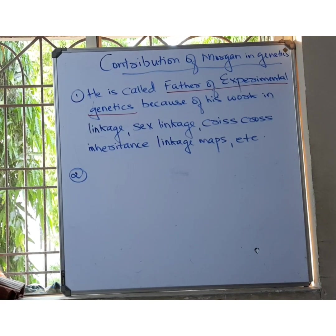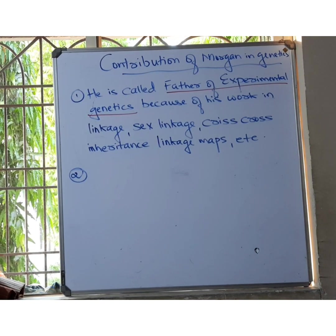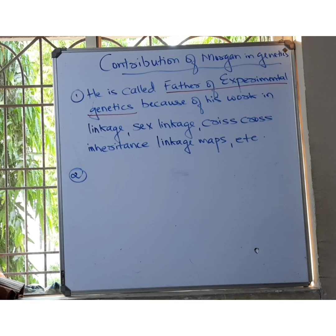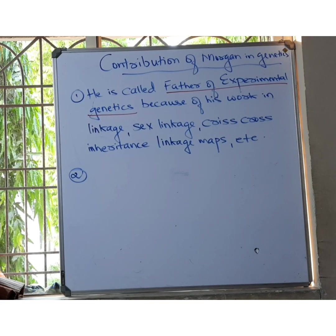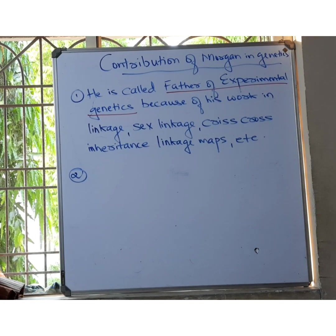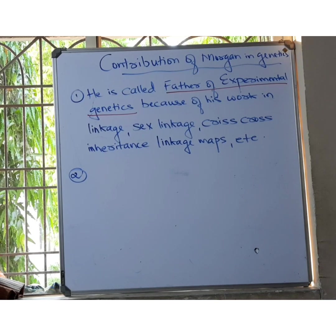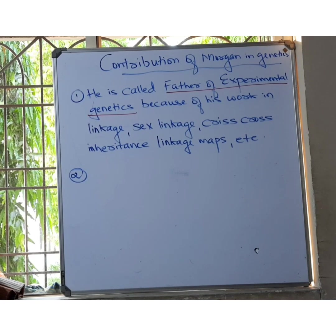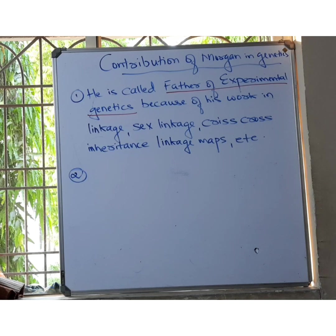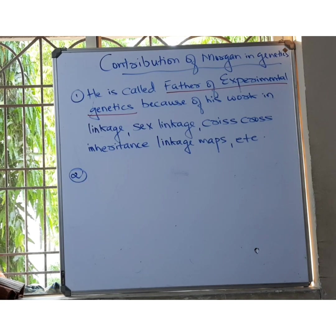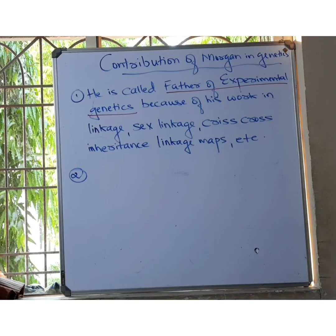Thomas Hunt Morgan is the father of experimental genetics because he conducted lots and lots of experiments to prove many theories like linkage, sex linkage, criss-cross inheritance, and linkage maps. These are all topics we will discuss in this chapter.